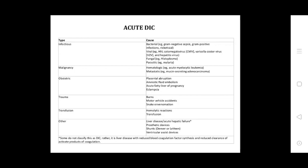Malignancy: hematological, for example acute myelocytic leukemia; metastatic, for example mucin-secreting adenocarcinoma. Obstetric causes include placental abruption, amniotic fluid embolism, acute fatty liver of pregnancy, and eclampsia.